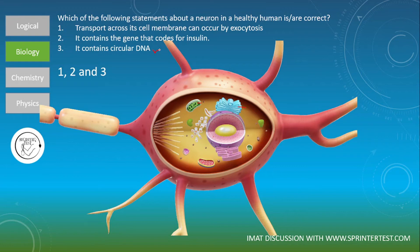Because the neuron contains cellular DNA, statement three is correct. Furthermore, when a zygote is formed it keeps multiplying until a baby, and the baby keeps multiplying with the same number of chromosomes and genes throughout all body cells. Therefore the gene that codes for insulin is present in every cell, including the neuron. Statement two is also correct, confirming the answer is one, two and three.